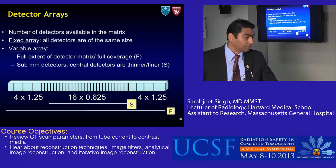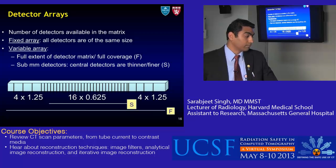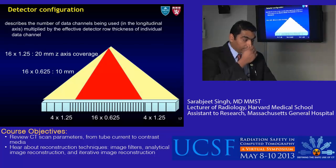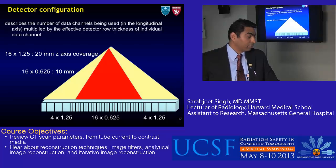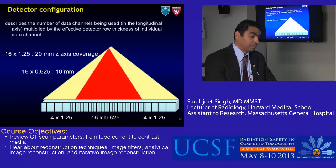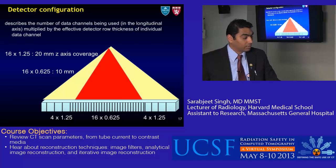Next we have detector arrays, which is the number of detectors available in the matrix. It can be a fixed type, where all detectors are the same size, or variable. In variable types, there is the full extent of the detector matrix (full coverage) and sub-millimeter detectors, which are central detectors that are thinner or finer. Detector configuration describes the number of data channels used in the longitudinal axis multiplied by the effective detector thickness of each data channel. For example, 16 × 1.25 mm gives 20 mm z-axis coverage, and 16 × 0.625 mm gives 10 mm z-axis coverage.